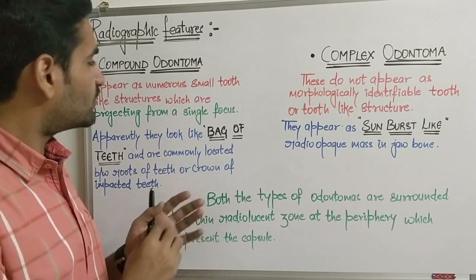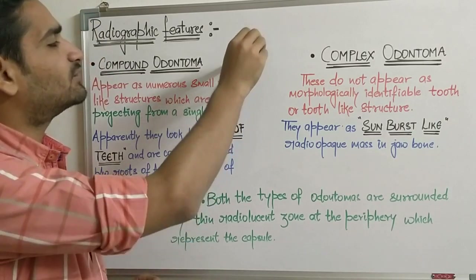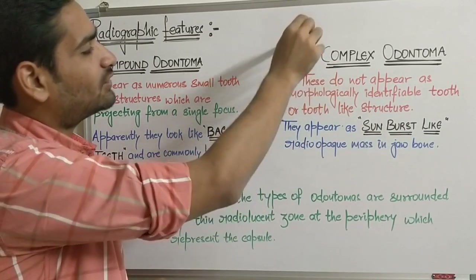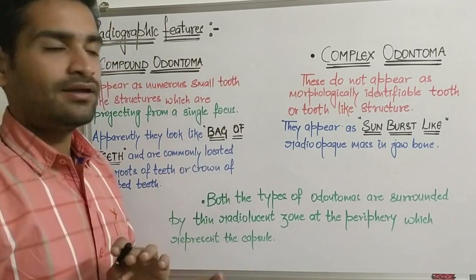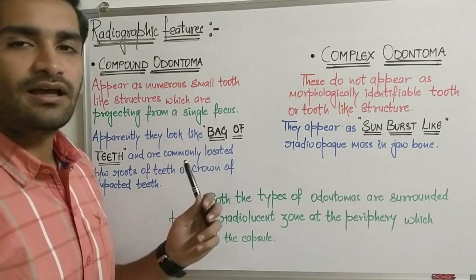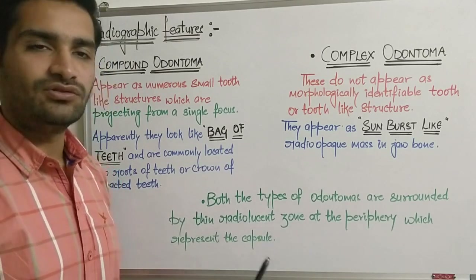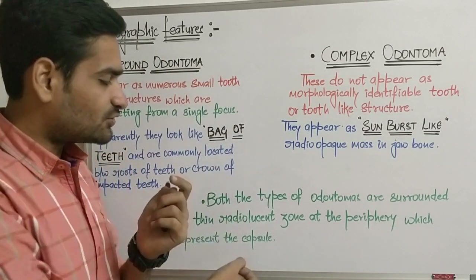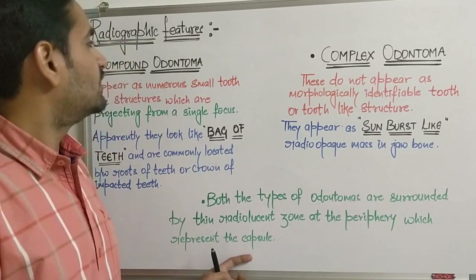To revise the radiographic features: compound odontoma shows tooth-like structures projecting from a single focus — bag of teeth appearance. Complex odontoma shows a calcified mass without any tooth-like structures, with sunburst appearance. Both types of odontomas are surrounded by a thin radiolucent zone at the periphery representing the capsule of the lesion.